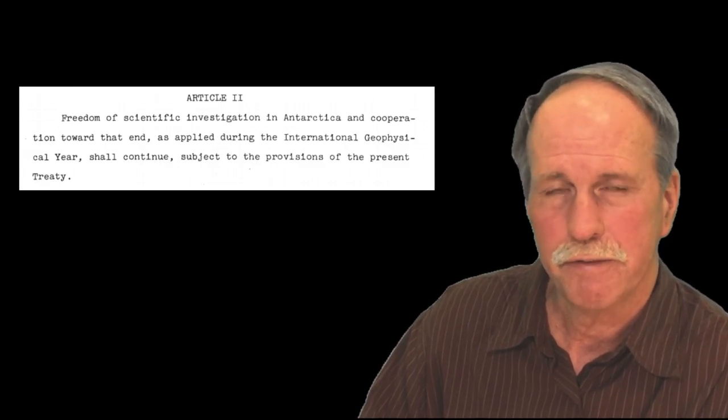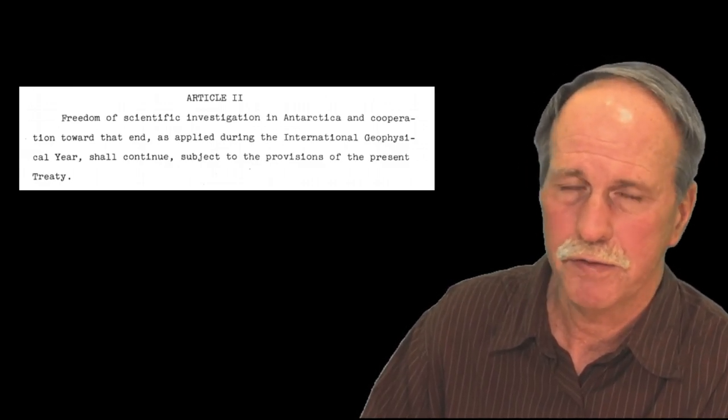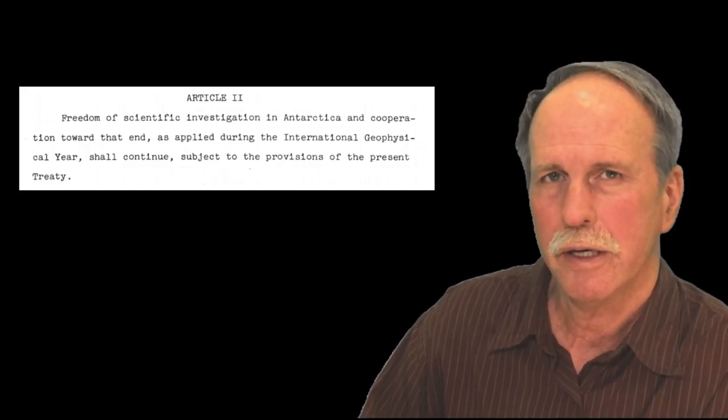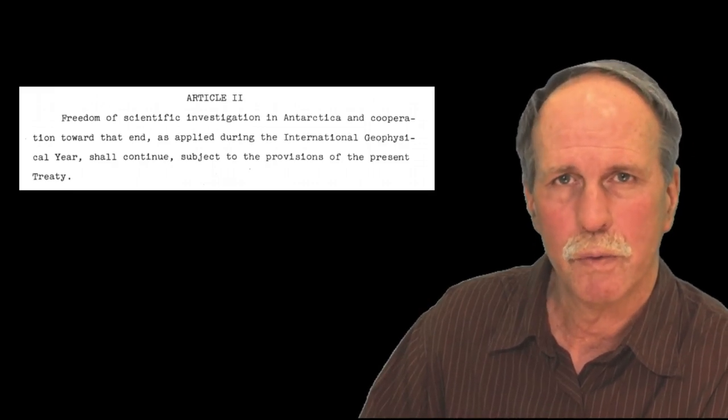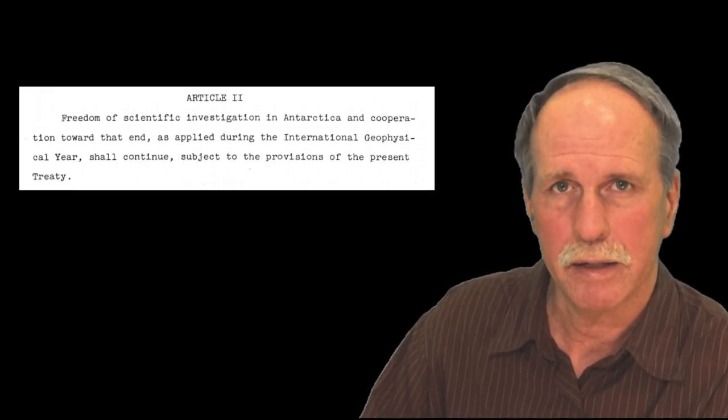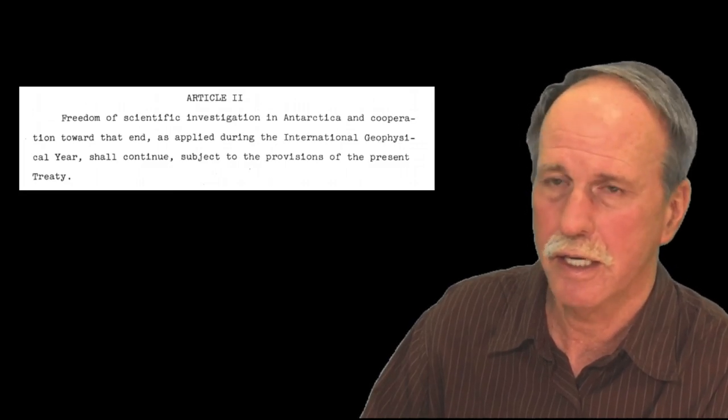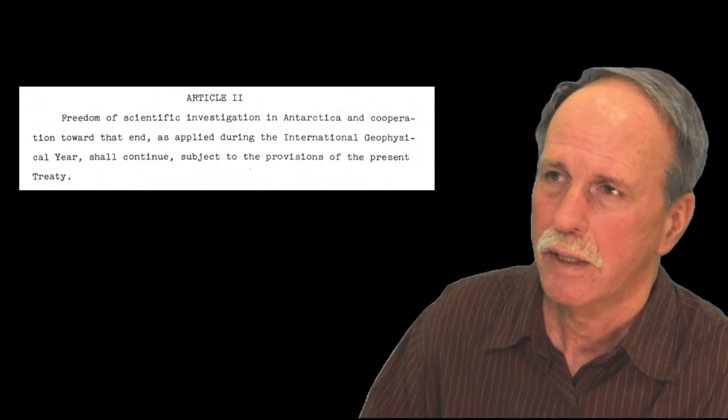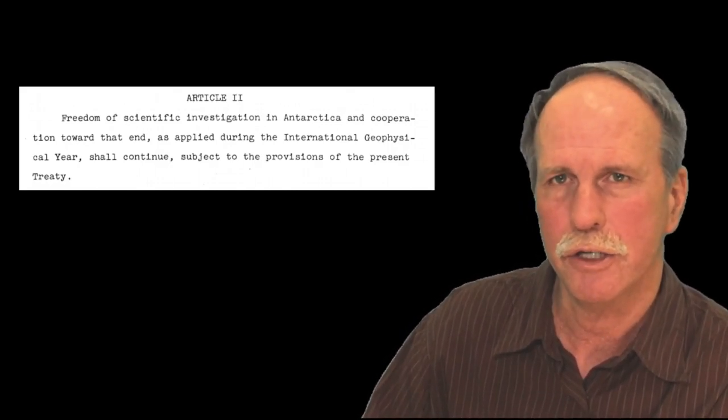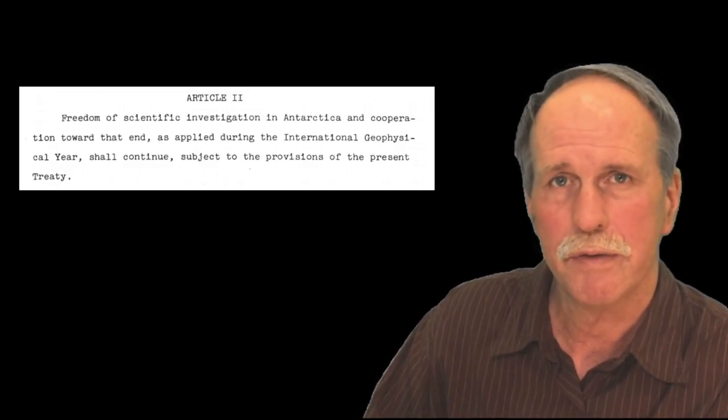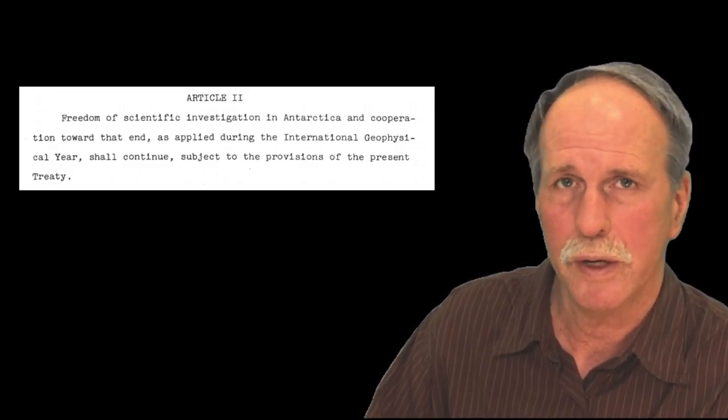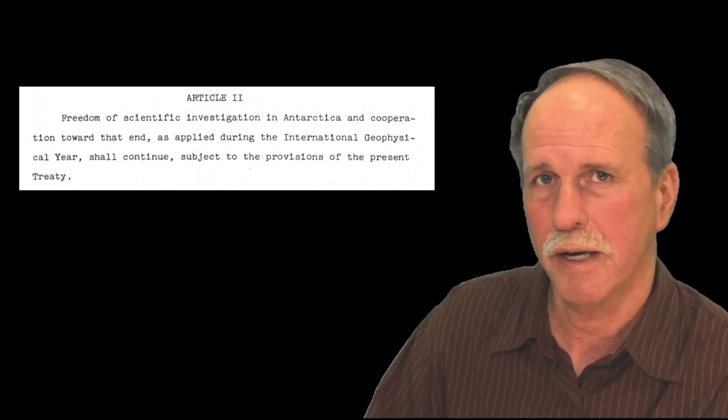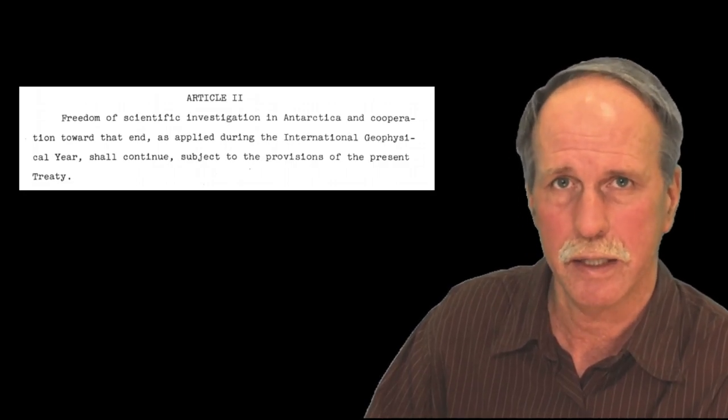Now Article 2 refers to the International Geophysical Year. That was 1957 to 58, the year before the treaty was worked out. During the International Geophysical Year, scientists from all over the world studied the earth to learn more about it and exchanged scientific information and did cooperative studies. It was kind of cool. Now in Antarctica, one of the Russian meteorologists spent the winter at Little America and one of the American meteorologists spent the winter with the Russians. We all sat around the campfire and sung kumbaya and talked about how great science was and everybody wanted to go ahead and continue that.